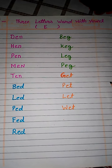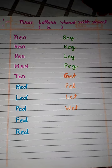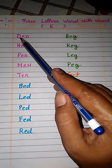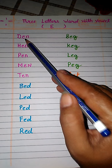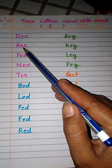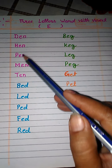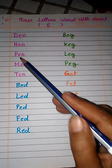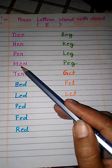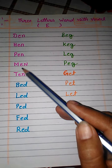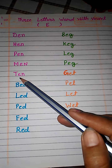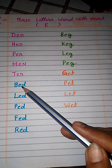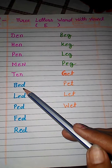Now we will repeat it with phonic sound. D, E, N — den. H, E, N — hen. P, E, N — pen. M, E, N — men. T, E, N — ten. B, E, D — bed.